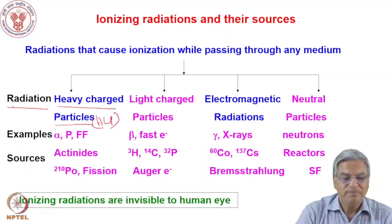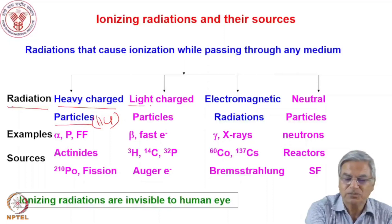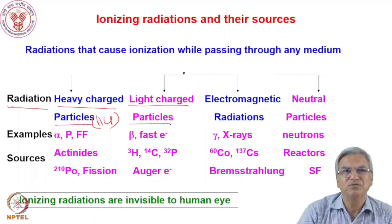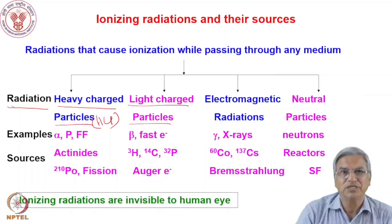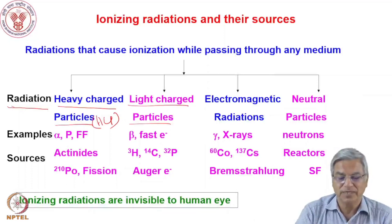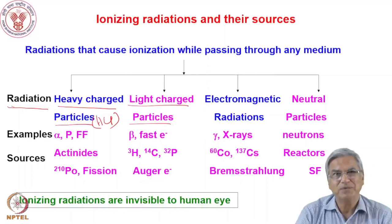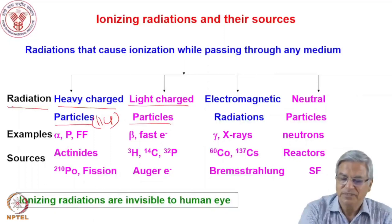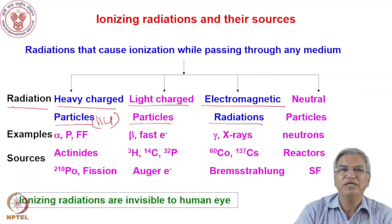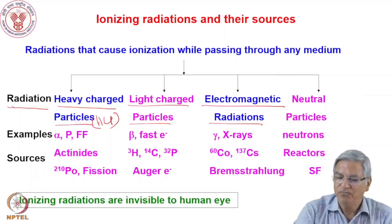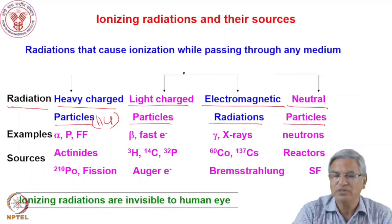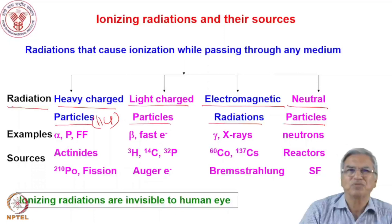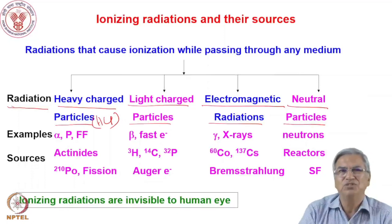Then we have the light charged particles like electrons and positrons. Even the beta particles and Auger electrons will come in that category. These are charged particles but light — they are extranuclear particles, not nuclear particles. Then we have the electromagnetic radiations: gamma rays and X-rays. And lastly we have the neutral particles like neutrons. These are the four classifications which we will discuss one by one.